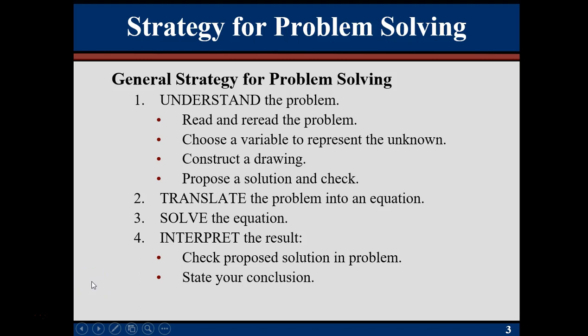Regardless of the type of word problem you're working on, you want to use these four steps. The first step is the hardest part, and that's understanding the problem. You may have to read and re-read the problem a few times. Select a variable to represent your unknown. It may be helpful to construct a drawing. Then think about what kind of solution are you expecting to have, so that way you have something to check your answer against. Then you'll translate whatever that problem was into an equation, solve it, and then you'll interpret the result. Not only will you check it to make sure that's right, but you'll also want to state your conclusion so that it makes sense.